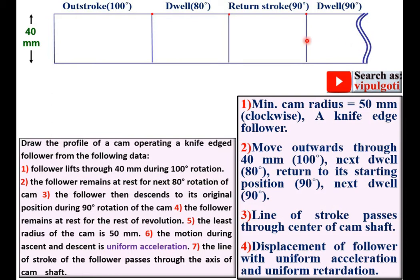And here this is the 90 degree dwell period. So if you can't accommodate the length of the remaining dwell is 9 cm in this sketchbook, then you can use this symbol.